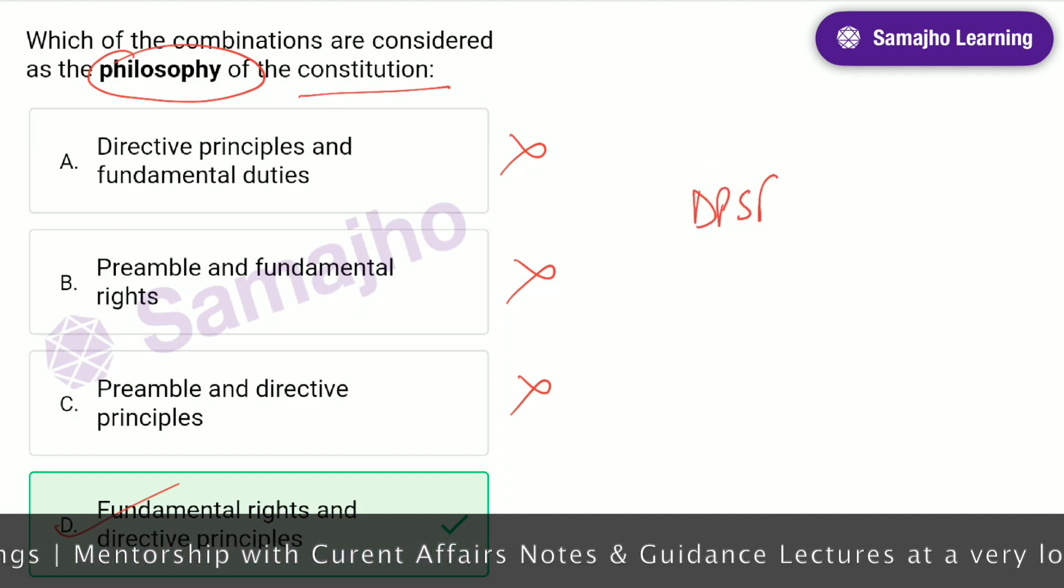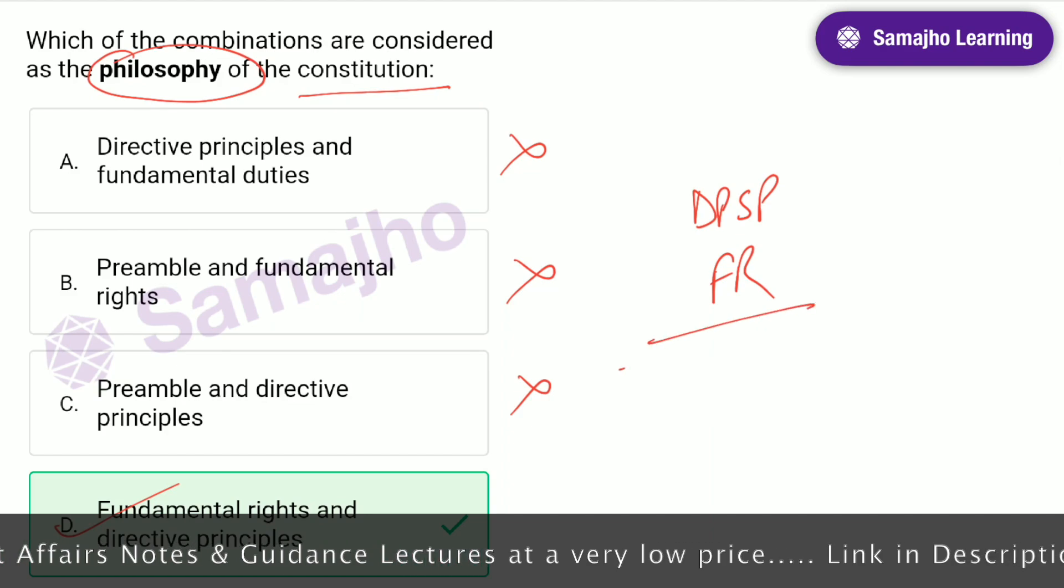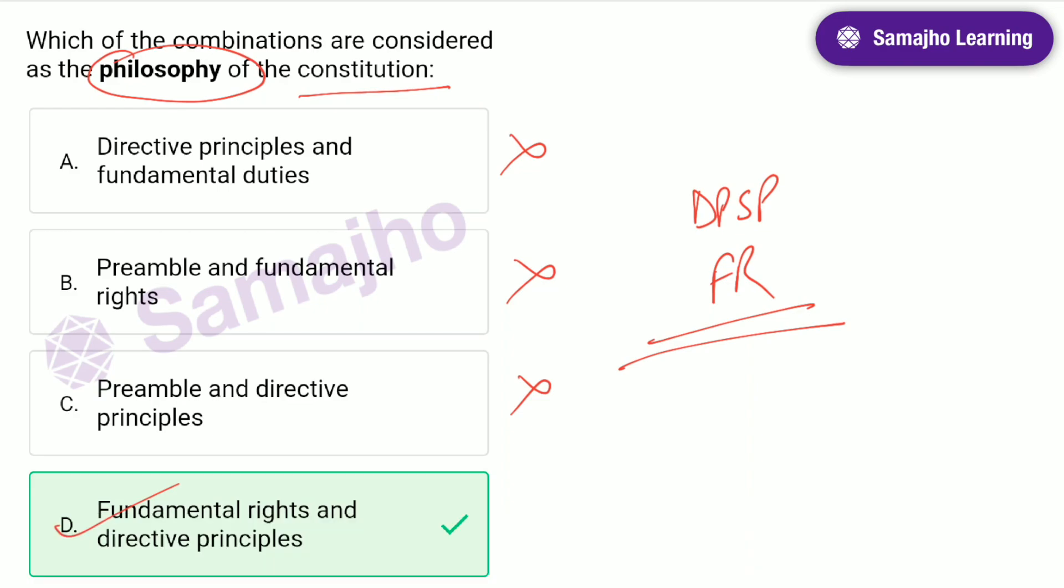Basically, we are talking about DPSPs and the Fundamental Rights. They contain the philosophy of the Constitution and it is the soul of the Constitution. Grenville Austin has also described it that the Directive Principles and the Fundamental Rights are the conscience of the Constitution. The preamble, you can cut it with B and C.